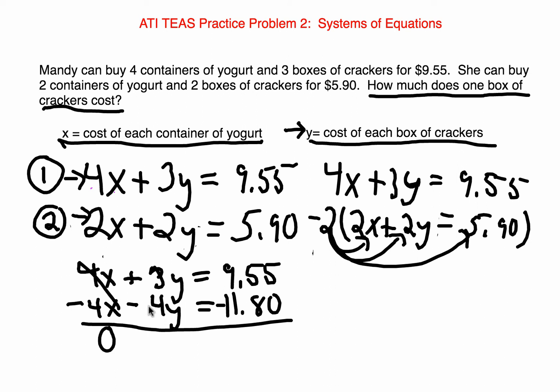3Y plus negative 4Y is negative 1Y. And 9.55 plus negative 11.80 is negative 2.25.